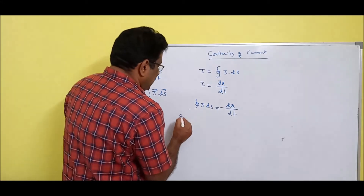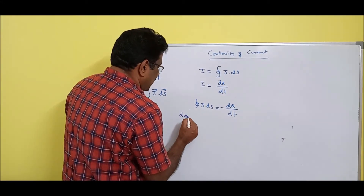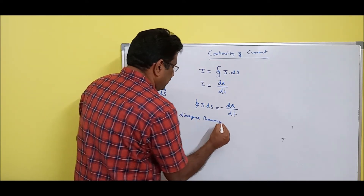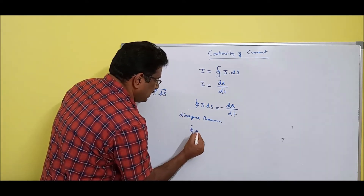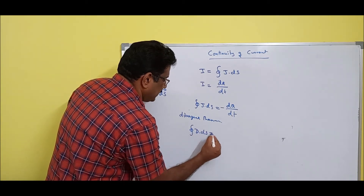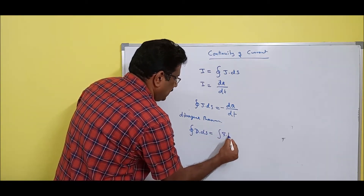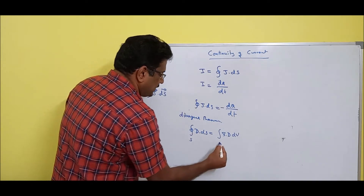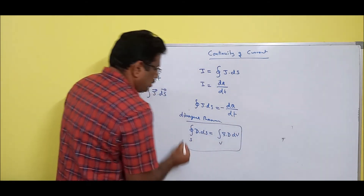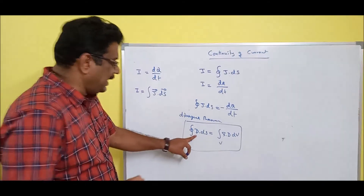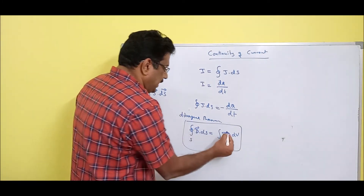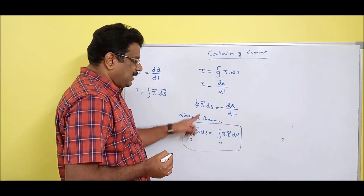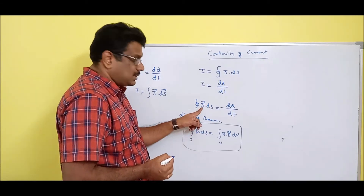Recall what the divergence theorem says: the closed integral of D dot dS is equal to the volume integral of del dot D dV. This is surface equals volume. And it is not only for D — it is for any vector field. So can I rewrite with J instead of D? Yes, it is allowed.